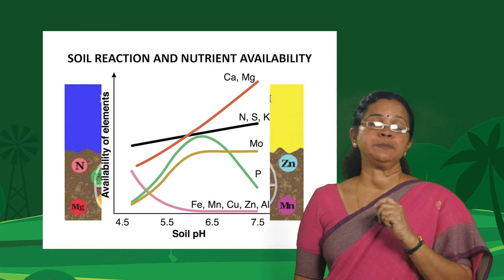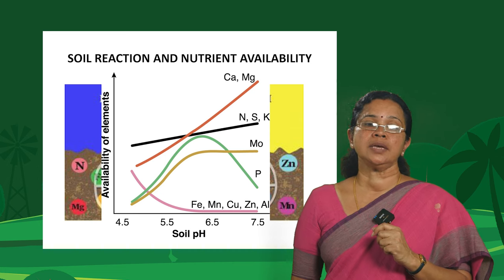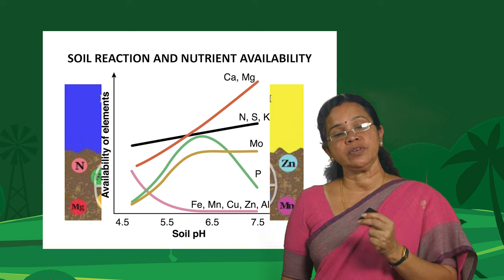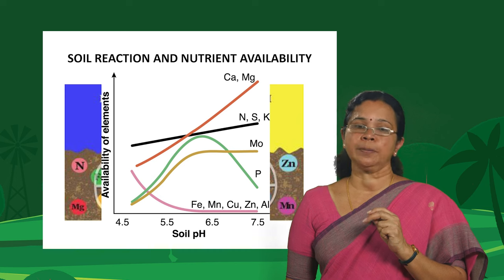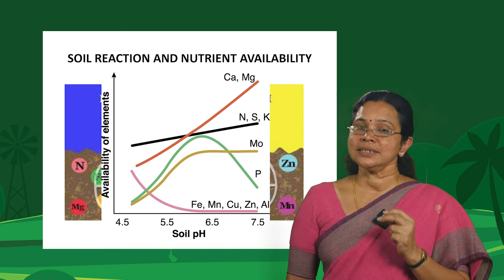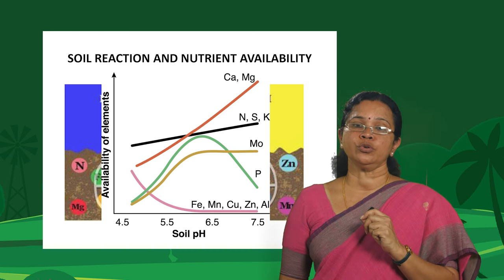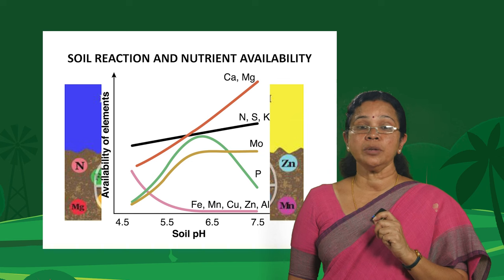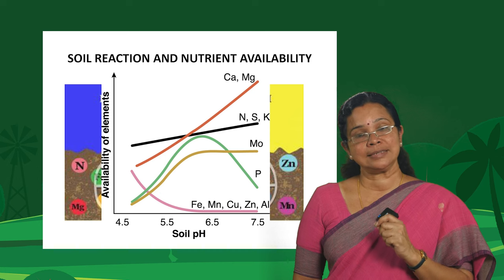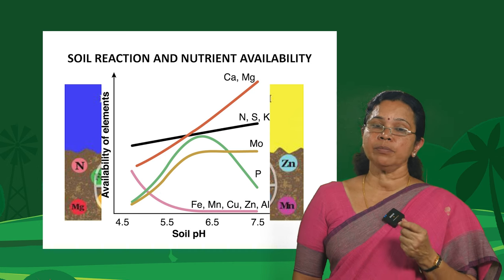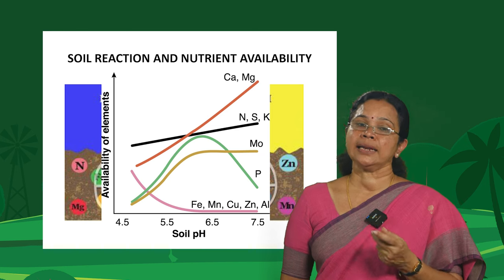This graph gives a better picture of the effect of soil pH on nutrient availability. Whatever we say about alkaline or acidic pH, it is always near-neutral pH that provides better availability of nutrients for crops. Among the micronutrients, molybdenum behaves slightly differently — its availability is always higher when the pH becomes alkaline in nature.